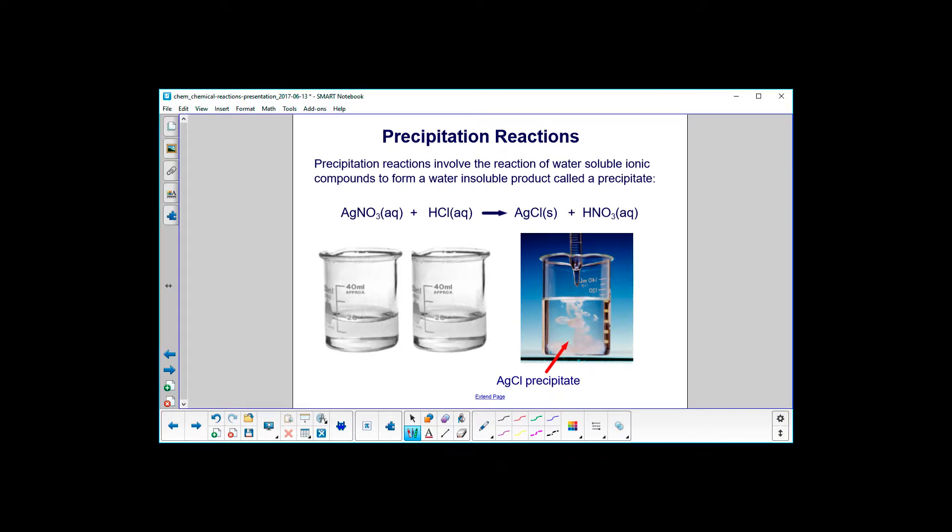Precipitation reactions involve the reaction of water soluble ionic compounds. That means they dissolve in water. And when they react, they form a water insoluble product called a precipitate.